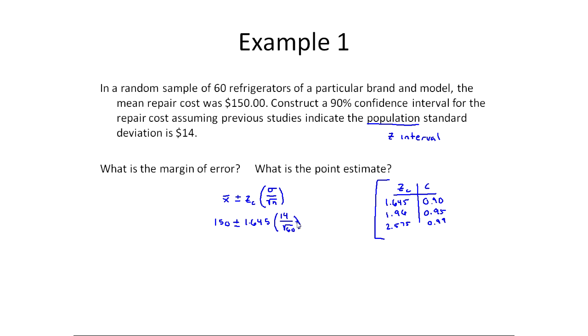Now when you do this calculation, it's important to make sure that you're doing everything within the calculator. So when I go in my calculator, I'm doing 14 divided by the square root of 60, and then I'm multiplying that by 1.645 all within the calculator. In other words, I'm not going to round to the very end. So I get 150 plus or minus 2.97.